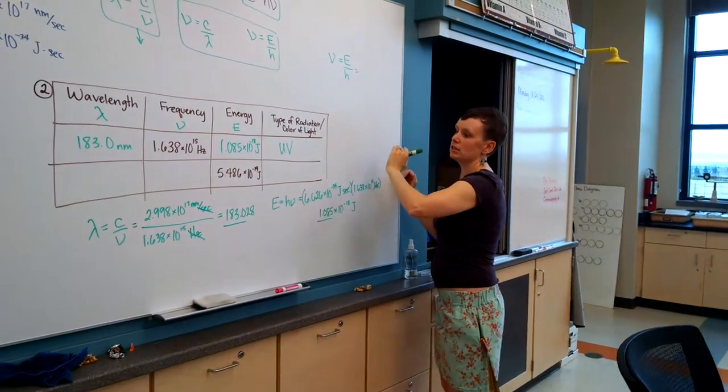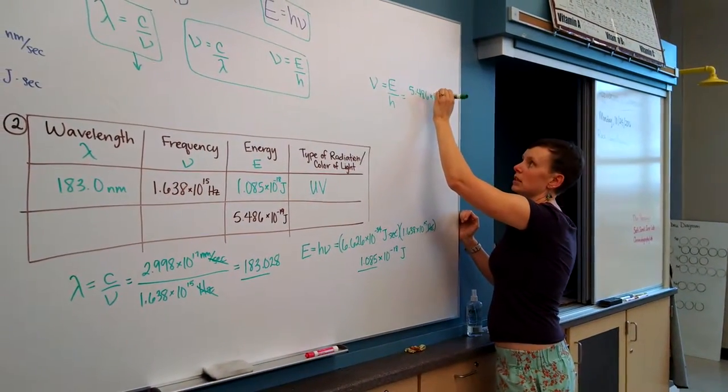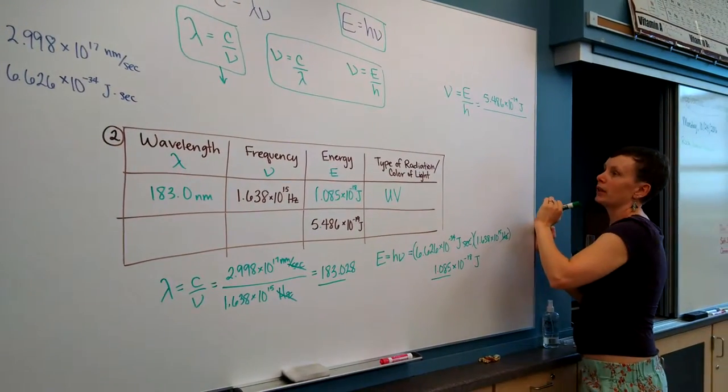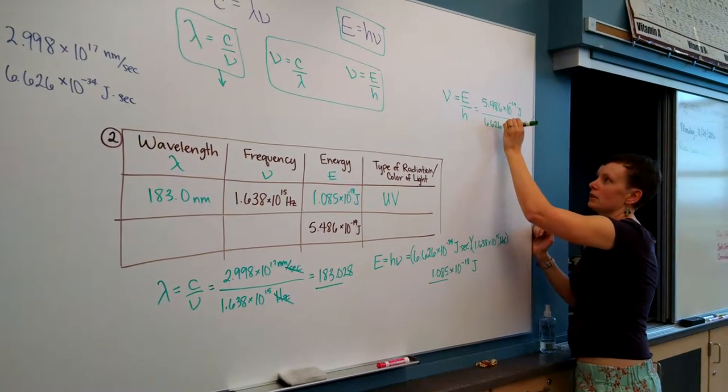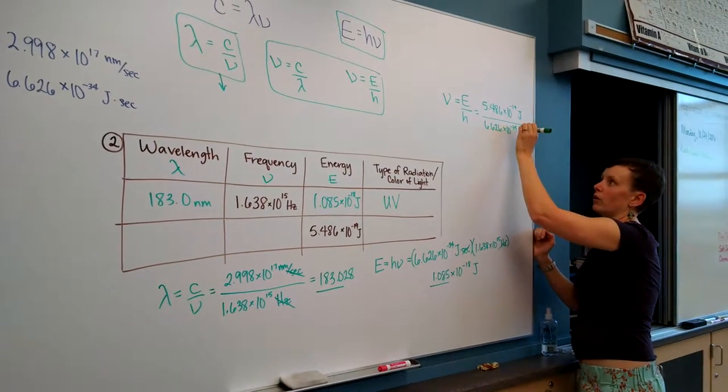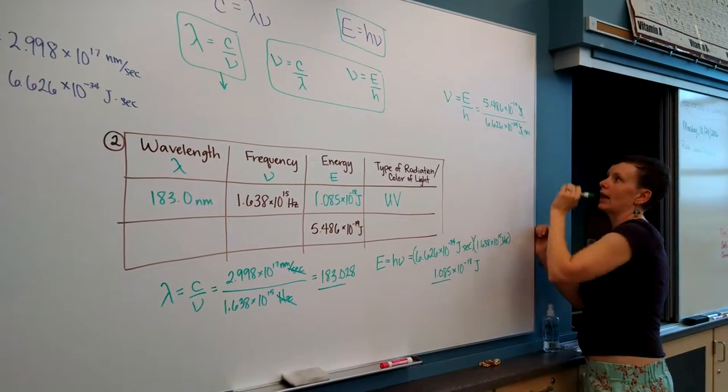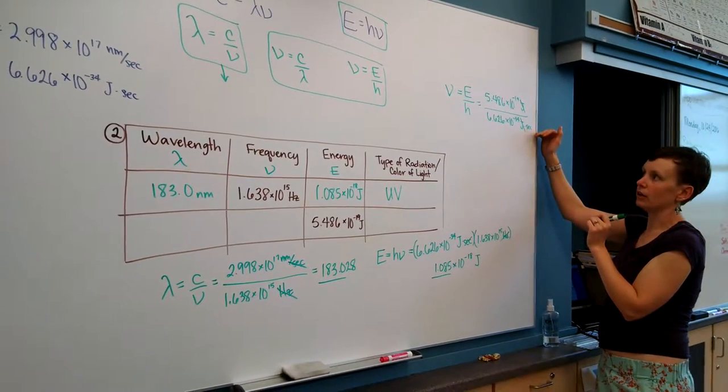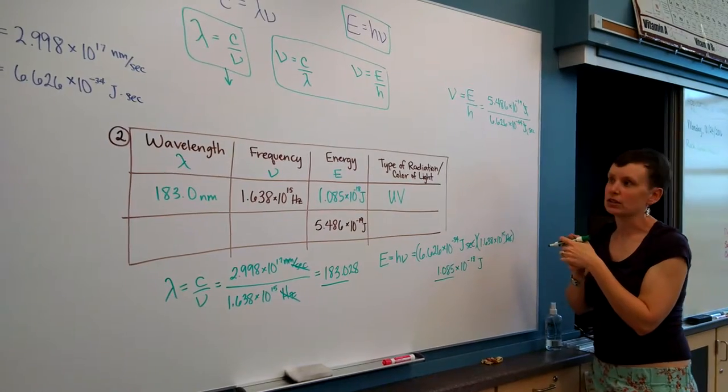That's 5.486 times 10 to the negative 19th joules, divided by Planck's constant, 6.626 times 10 to the negative 34th joules seconds. The joules cancel out. This is going to leave us with something per second, which is also called hertz, and then we'll type that into our calculator. I'll give you the final answers here in a minute.